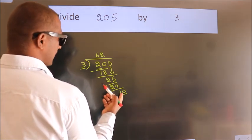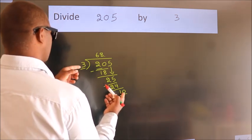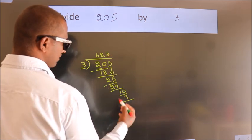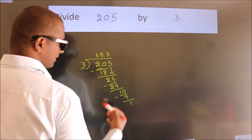A number close to 10 in the 3 table is 3×3=9. Now we subtract. We get 1.